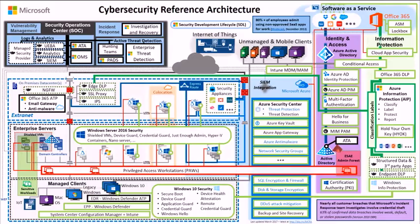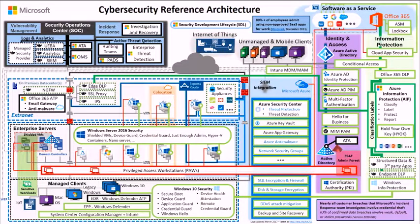This is the first module, the overview. As you look at the reference architecture, you might notice it's a bit complicated. This is something Microsoft built from a lot of lessons learned as we defend our own IT environment, our cloud services such as Azure and Office 365. We also have a consulting arm that works with customers to investigate incidents, recover from them, and implement mitigations. We brought all these lessons together into one reference architecture meant to help organizations understand what Microsoft has and the strategies and capabilities we believe customers need to be successful against modern threats.